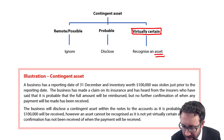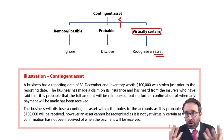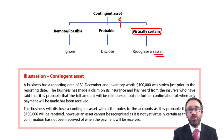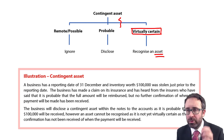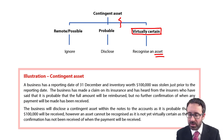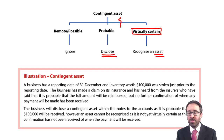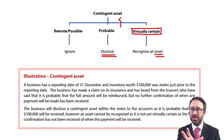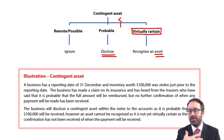However, I like to draw a little line here. If the contingent asset is probable — so there's a greater than 50% chance of us receiving it — it's not prudent to recognize an asset unless it's virtually certain. So therefore, you will just disclose it in the notes to the accounts. That's a bit different compared to a provision. With a provision, if it was probable, we would recognize it. However, with contingent assets, if it's probable, we only disclose it.